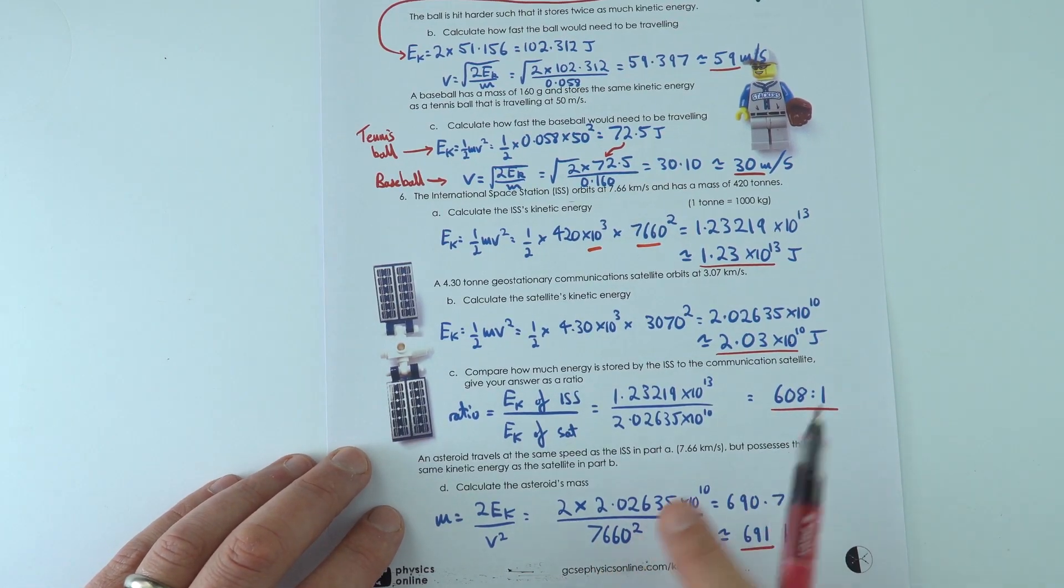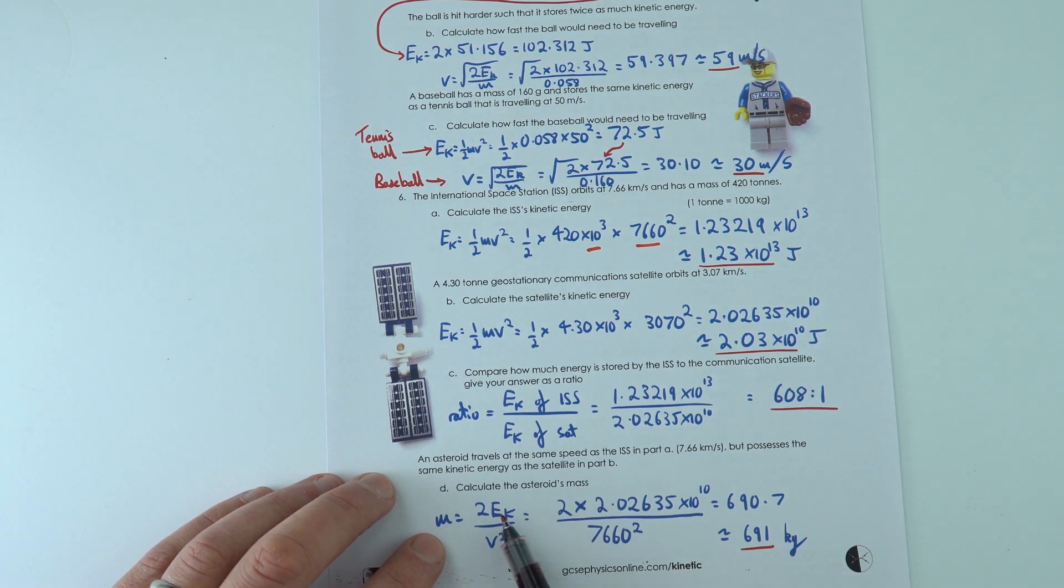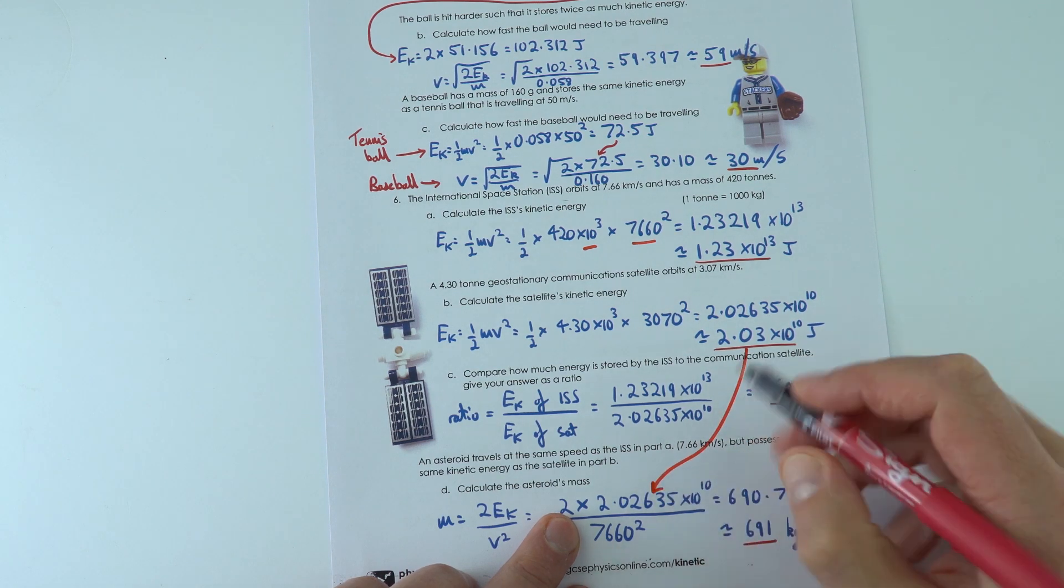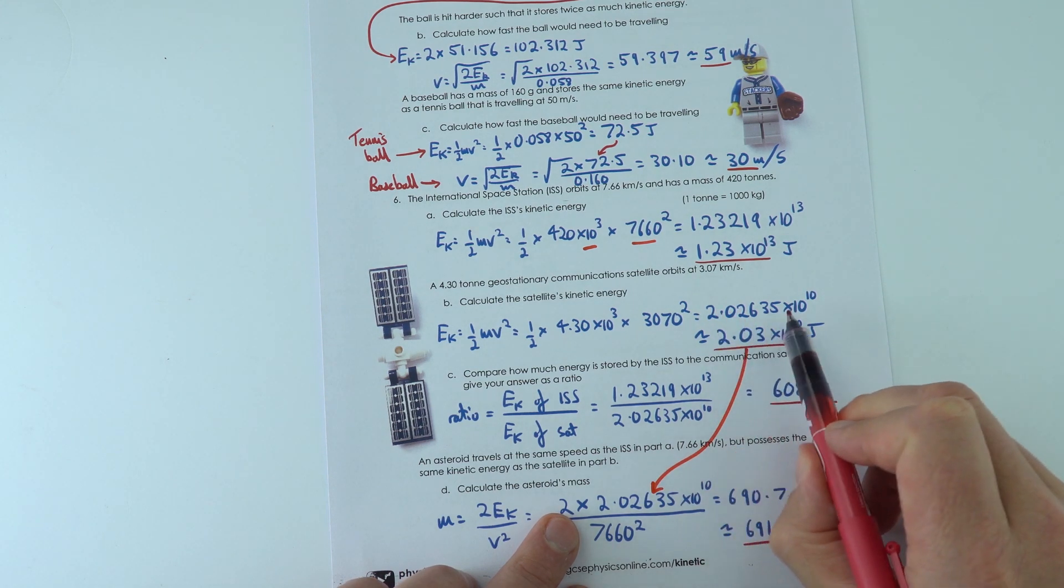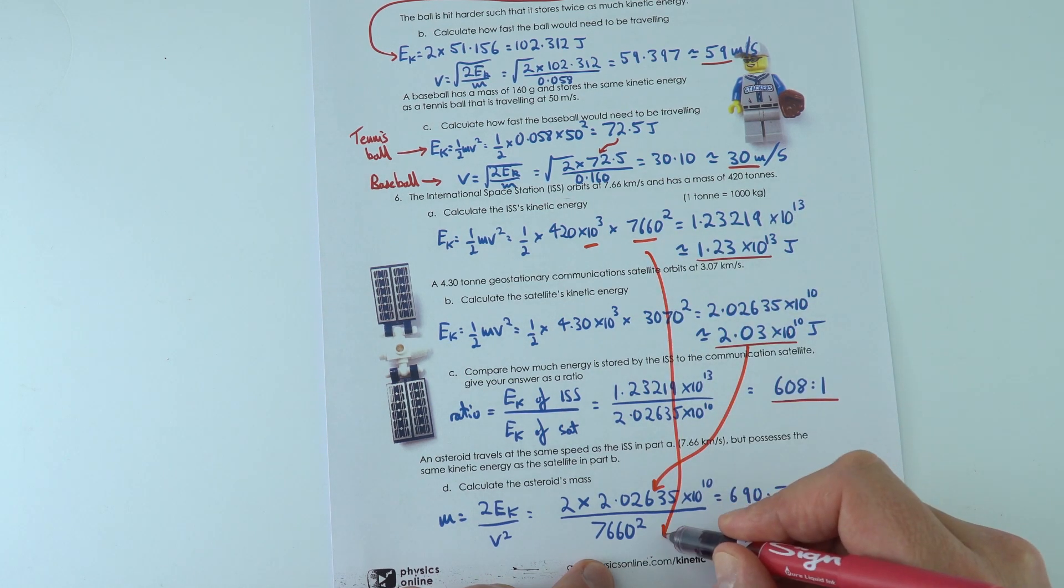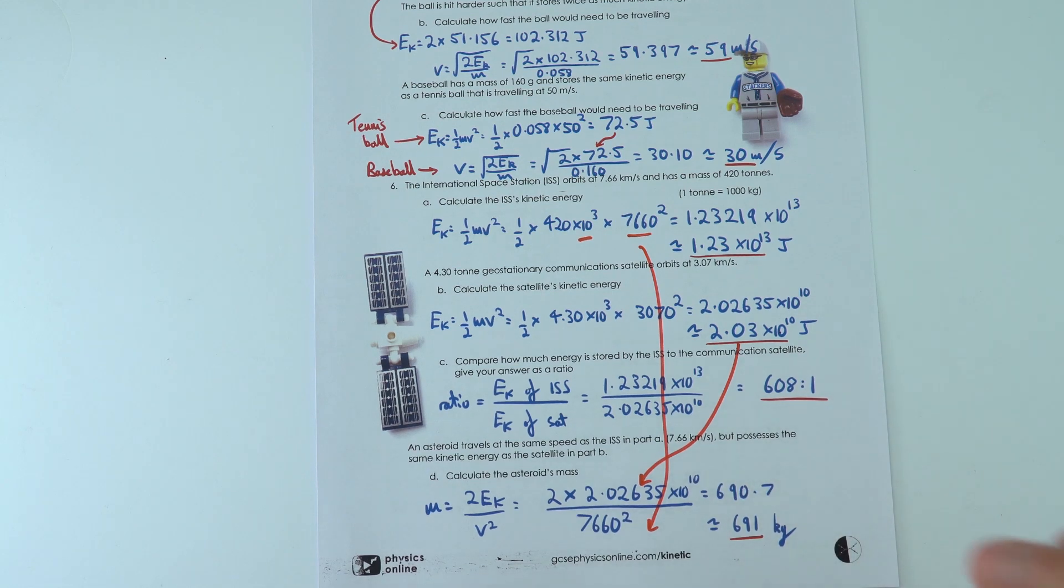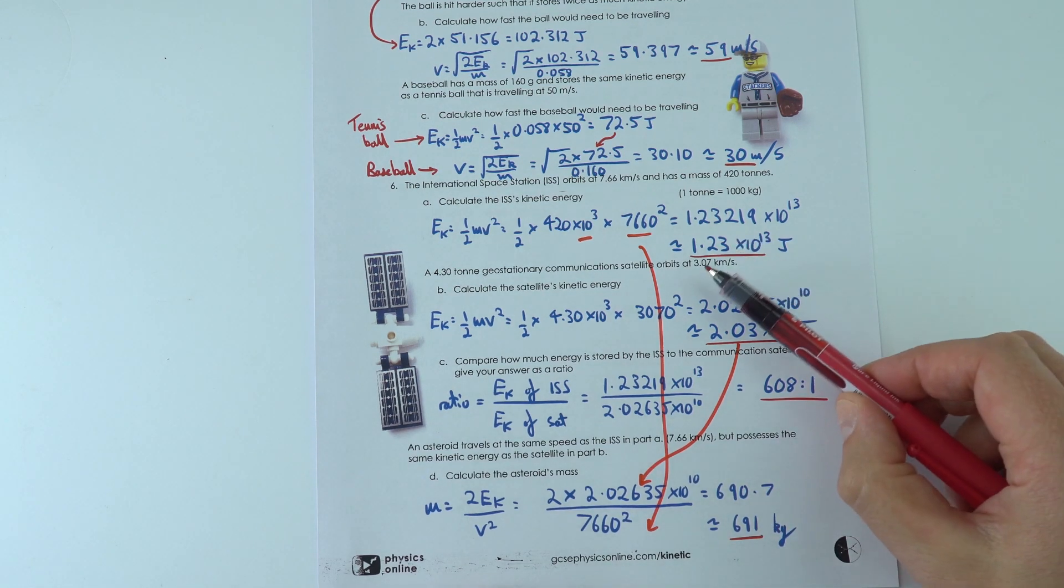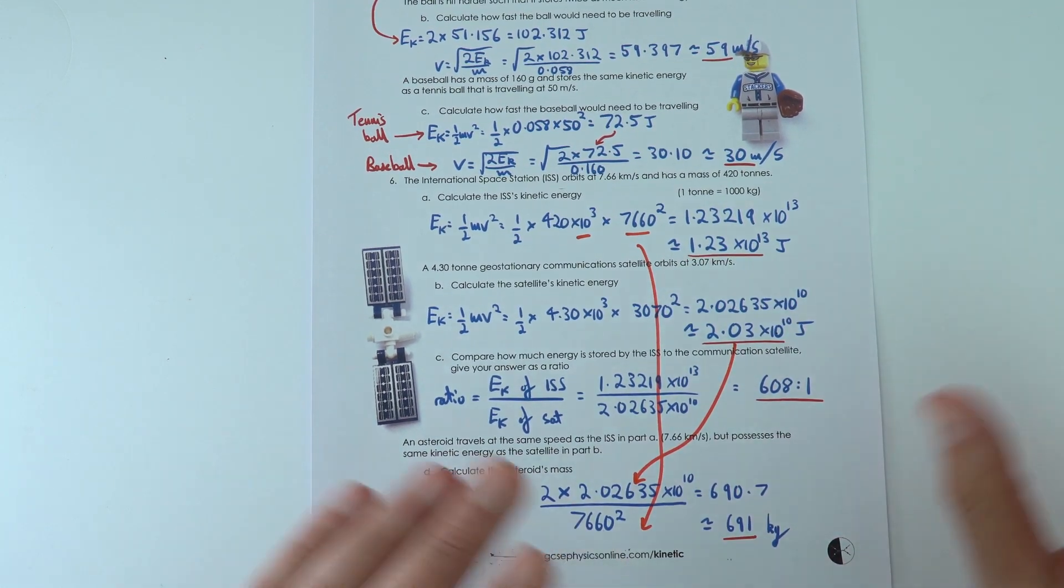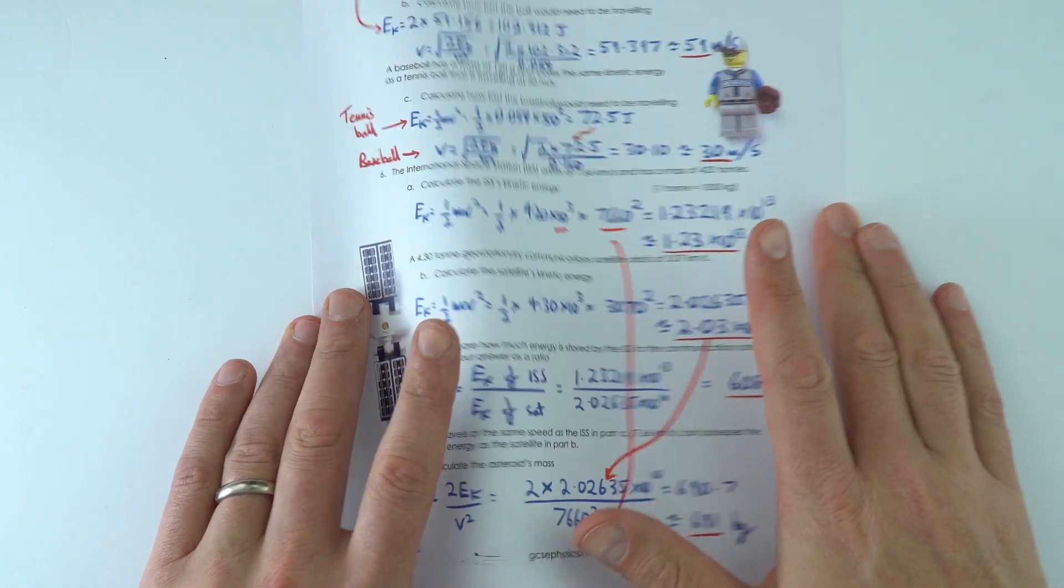And then for the very last bit, I just used the data that we had up here. So the asteroid's mass—well, mass is 2 times the kinetic energy over v squared. So I used this value up here and I used the value that I had on my calculator, I divided it by this speed that we had over here, and then that gave me a value of 690.7, so 691 kilograms to three significant figures, just like the raw data in the question.